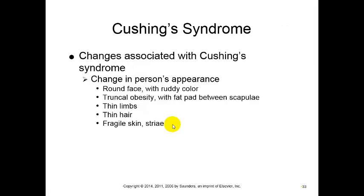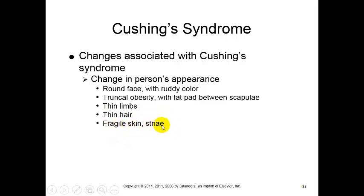So what is Cushing's syndrome? You're looking for a round face with a ruddy color. Truncal obesity of the trunk with a fat pad that develops between the scapulae - almost like a humpback. Thin limbs - typically the arms and legs are a lot thinner. Thin hair, fragile skin, and increased likelihood of stretch marks, called striae.